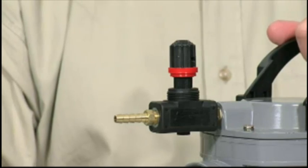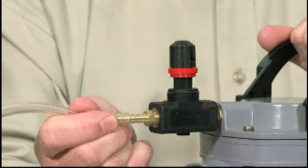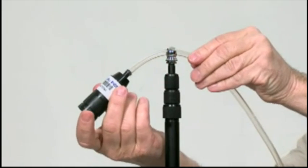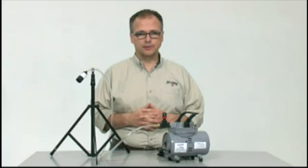To set up, just add five feet of tubing to the inlet of the regulator. Then attach the other end of the tubing to a cassette. That's it, you're set up and ready to draw samples.